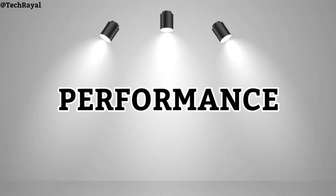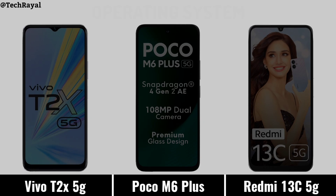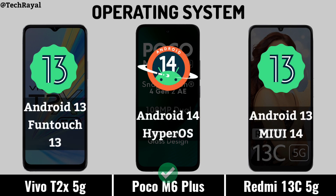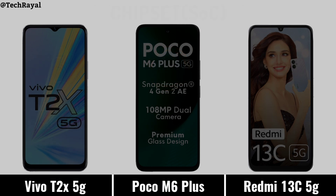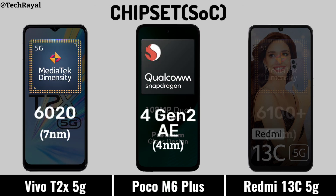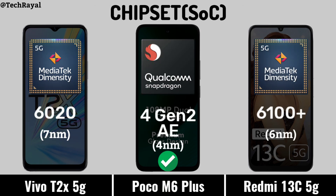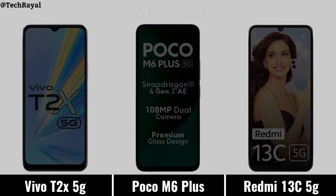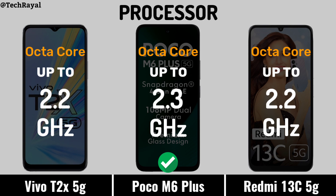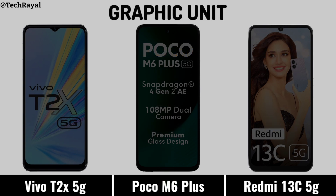Now for performance: operating system, chipset, processor, and graphic unit.